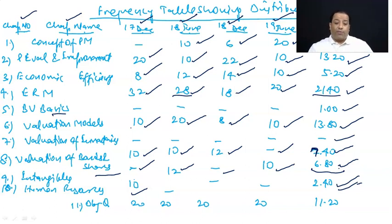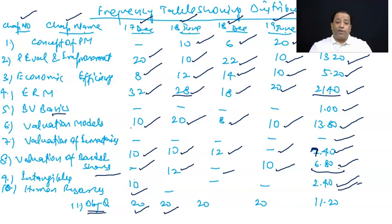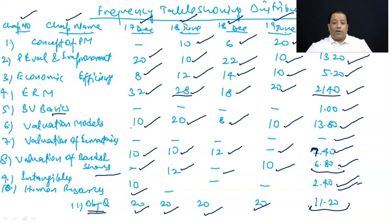Objective questions, जो 17 December attempt से शुरू हुए थे — 17 December में 20 marks, 18 June में 20 marks, 18 December में 20 marks, 19 June में 20 marks — and on an average 11.20 marks के यह objective questions आये हैं।